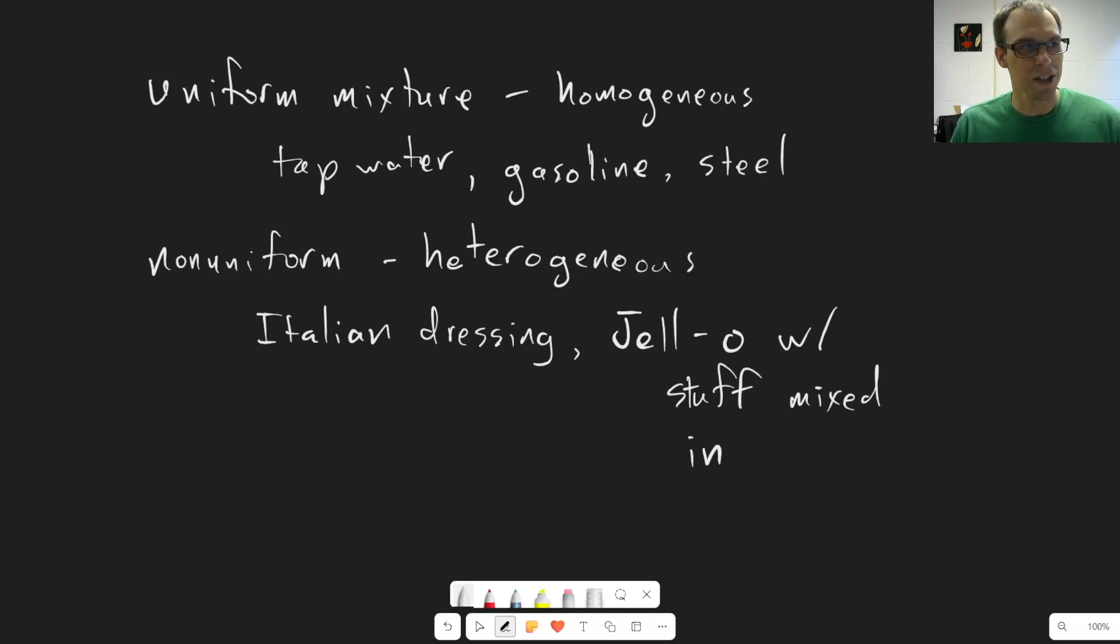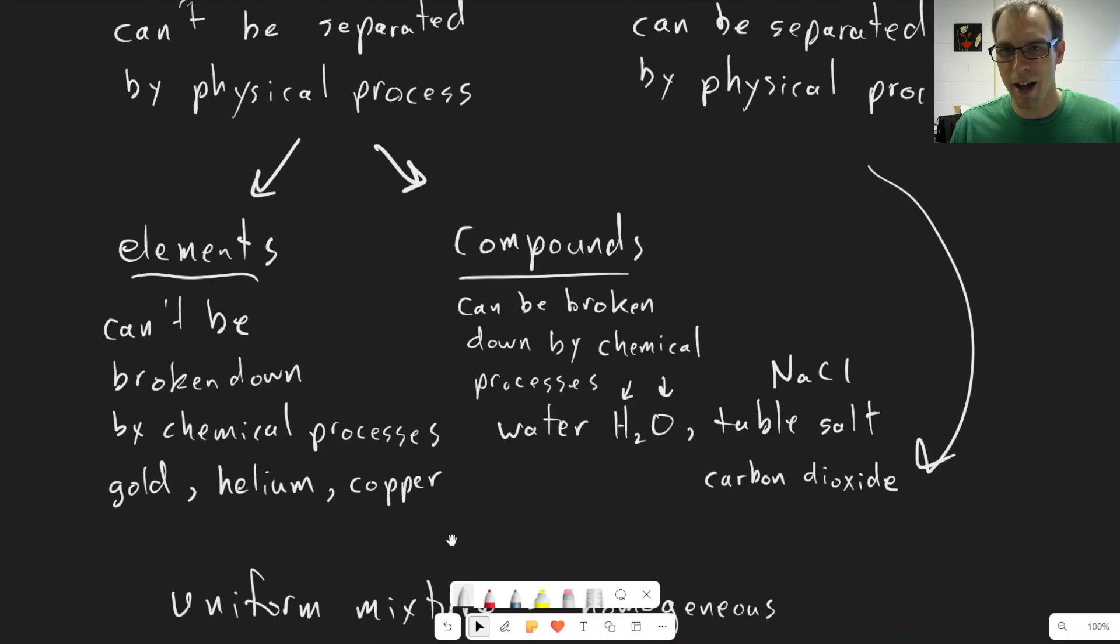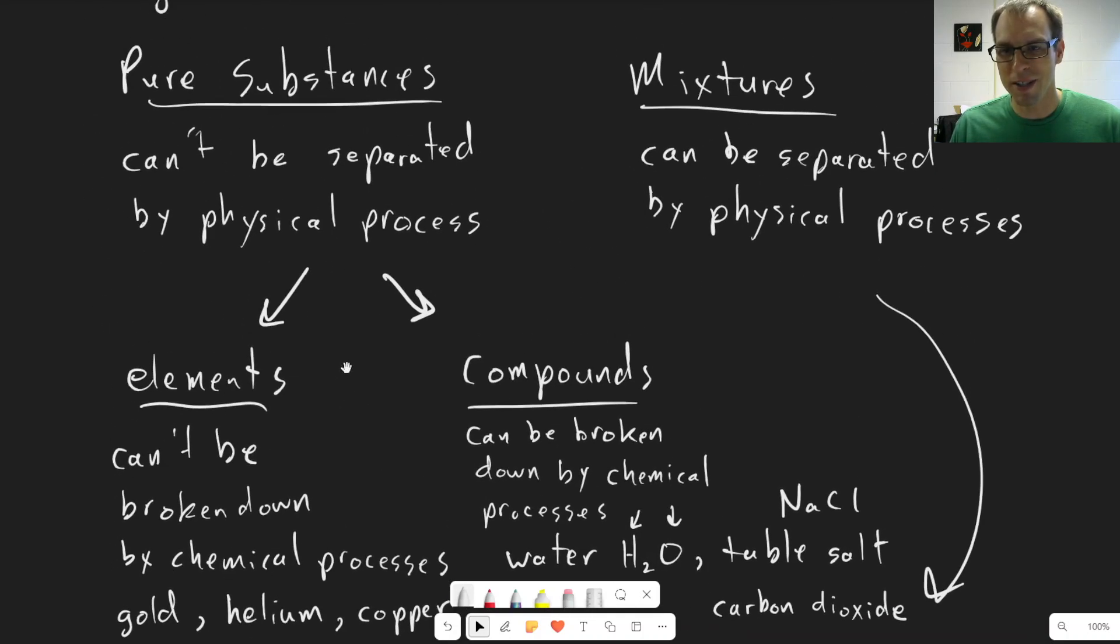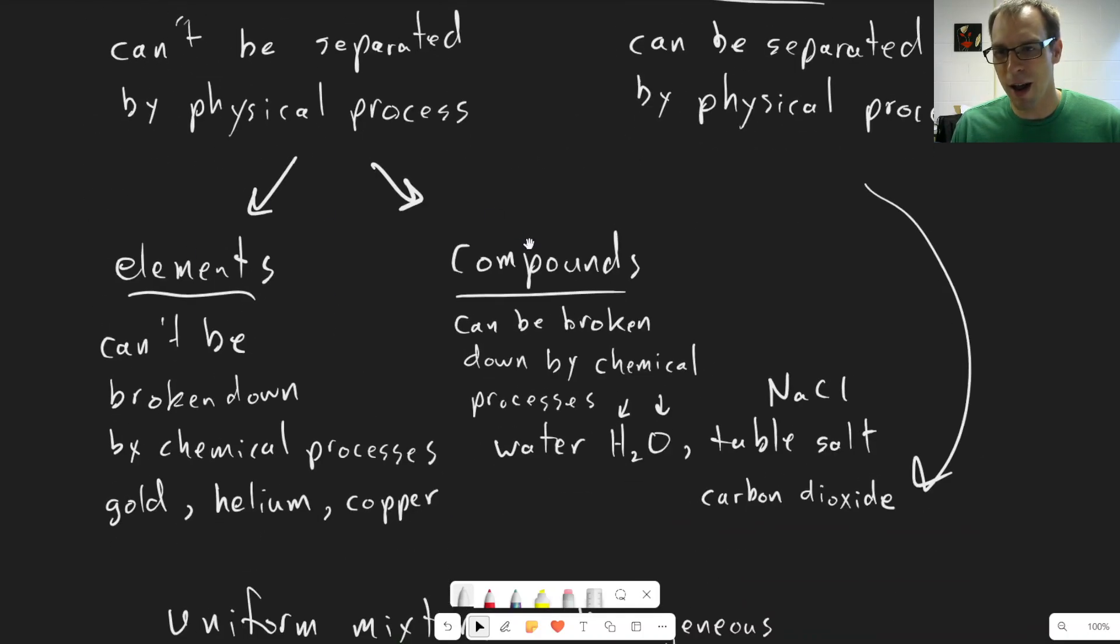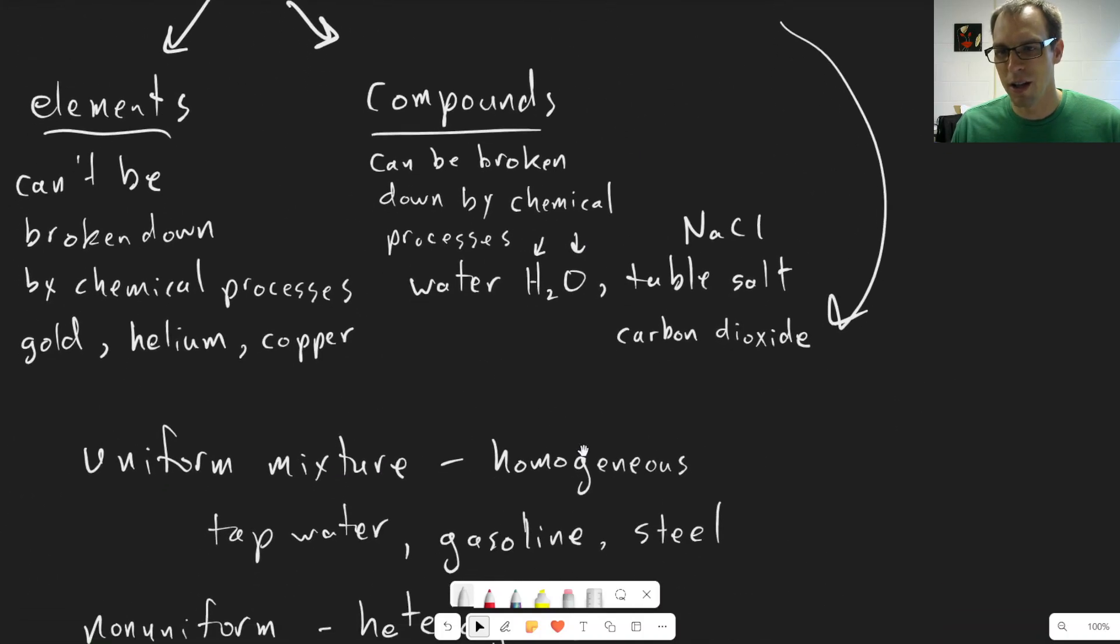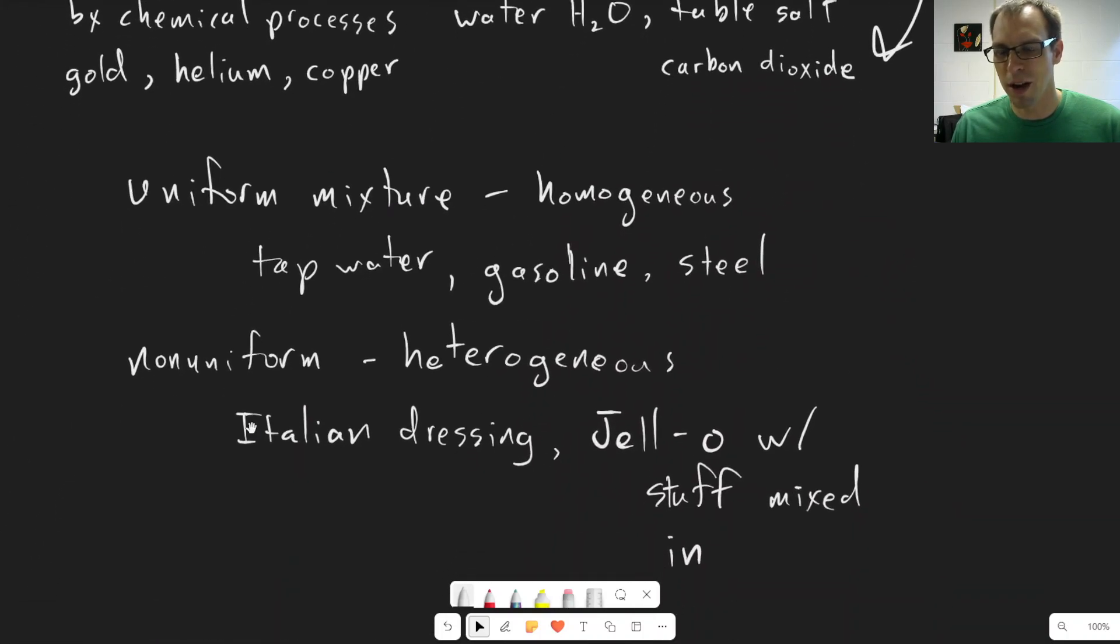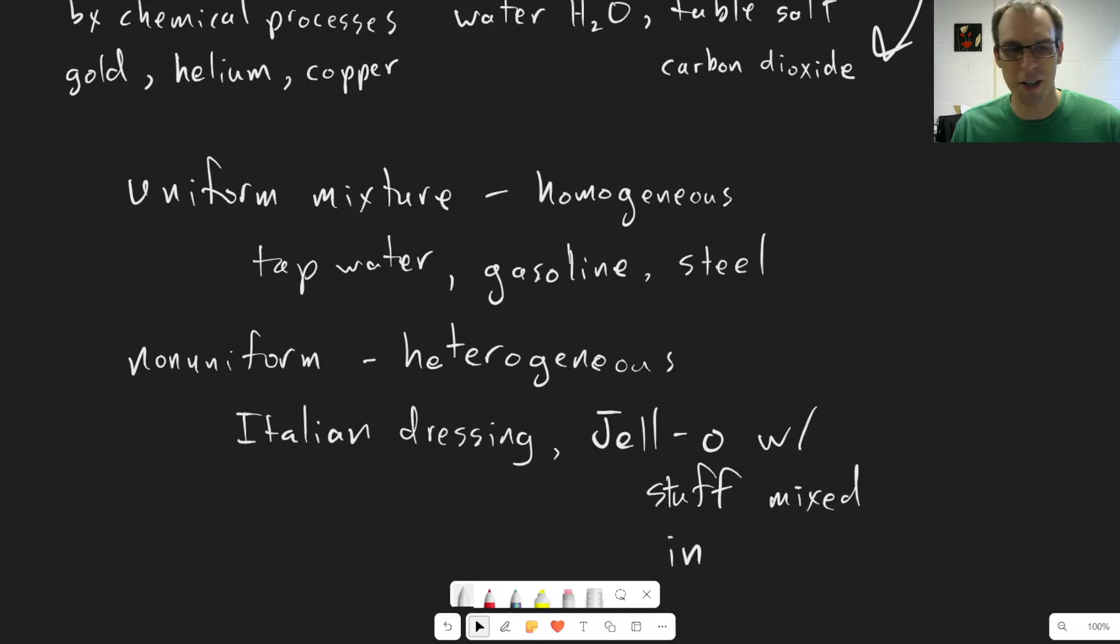Those are the general classifications that we use to describe different types of matter. Again, just a quick recap, we have pure substances, which can be an element or a compound. And then we have mixtures, which can be uniform or non-uniform, which we call homogeneous and heterogeneous.